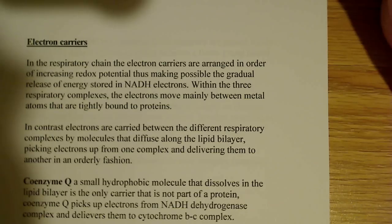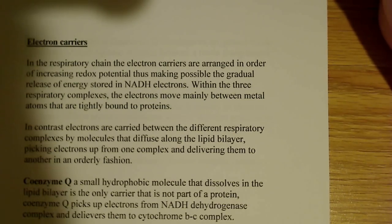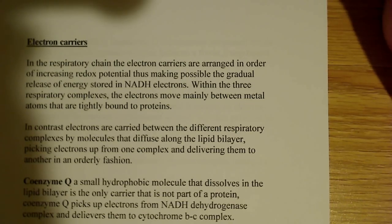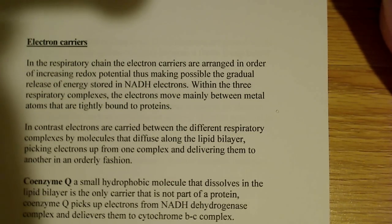In the respiratory chain, the electron carriers are arranged in order of increasing redox potential. Remember I said that we want these molecules to have higher and higher affinity for electrons, thus higher redox potential, making it possible for the gradual release of energy stored in NADH electrons.